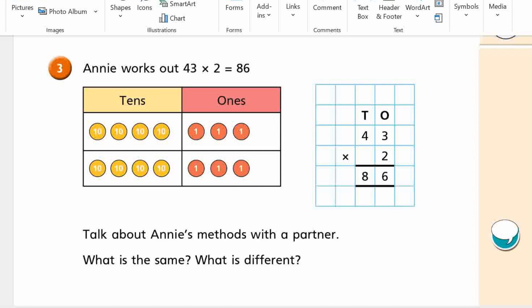Right, Annie works out 43 times 2 equals 86. Okay, so she's got her 43 here. This is 40. There's 4 tens and 3 here, and another one.